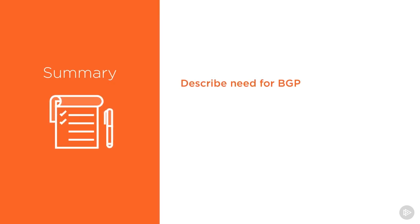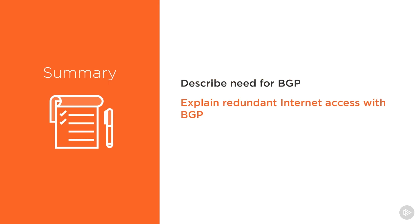To wrap up what we've done here, we took a look at the need for BGP and described how it operated, specifically how BGP operated in a network with redundant internet access. Then we did do a BGP demonstration showing how we create a BGP peer with another device in order to learn our default route.